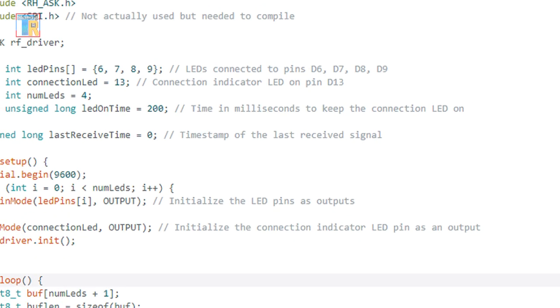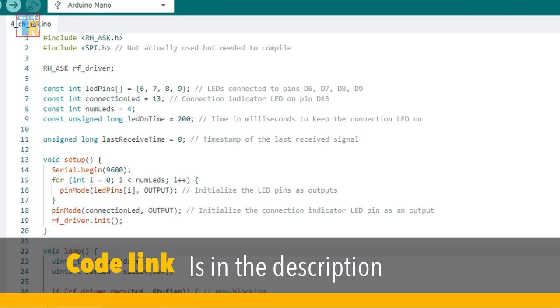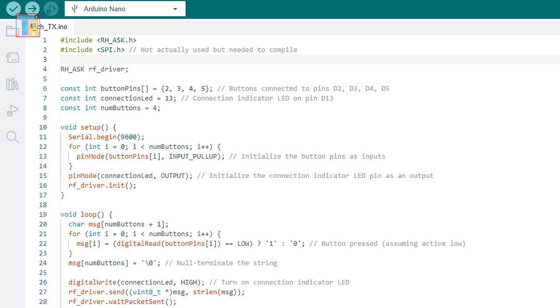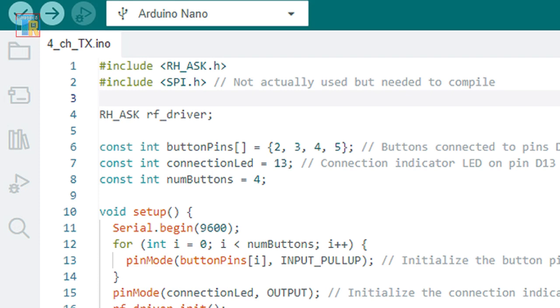Before making the connection you need to program the Arduinos with different codes. The transmitter and receiver codes are provided in the video description and you will also need a library called RadioHead. The library link is also in the description.